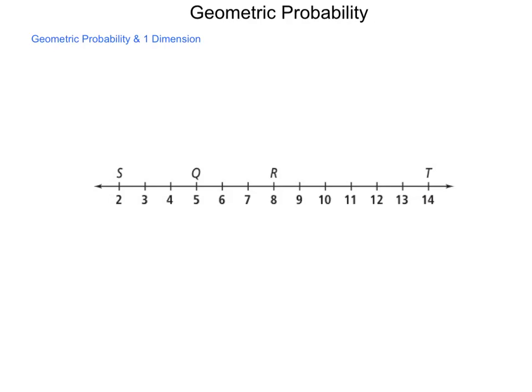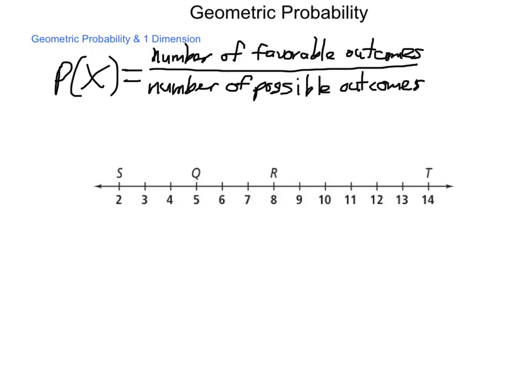In this lesson, we're going to take a look at what is called geometric probability. To begin, we'll take a quick reminder of what probability is. When we're looking at probability, we typically notate it as P of X, X being the events that we want to have happen. The way we calculate geometric probability is that we take a ratio of the number of favorable outcomes to the number of possible outcomes.